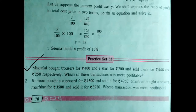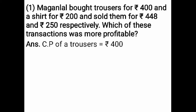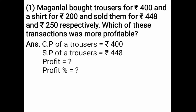Maganlal bought trousers for Rs. 400 and a shirt for Rs. 200, and sold them for Rs. 448 and Rs. 250 respectively. Which of these transactions was more profitable? First, write the cost price and selling price of the trousers, then find the profit and profit percent of the trousers.